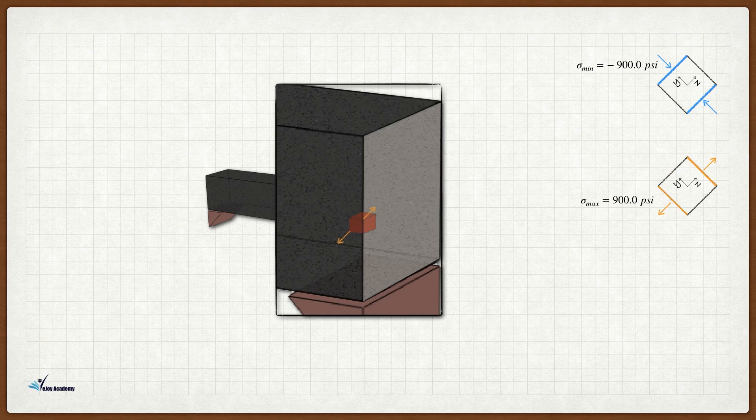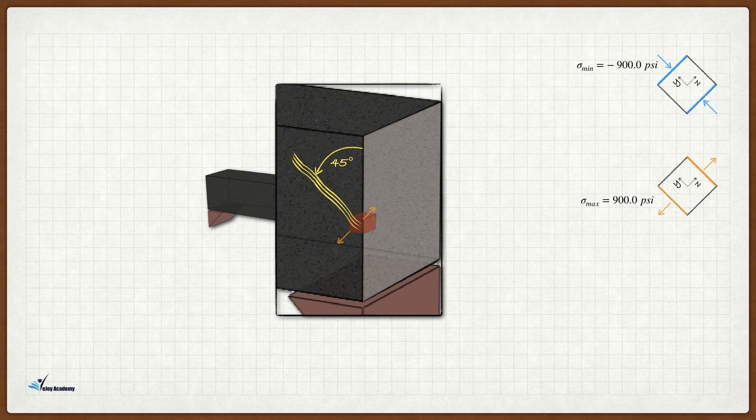By mapping the calculated tensile stress on the section, we can see that in this concrete beam cracks will form in 45 degree angle relative to the cross section. Alright everyone, that was it for this video.